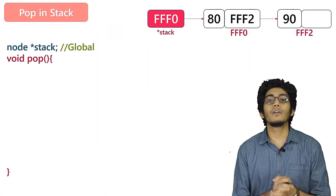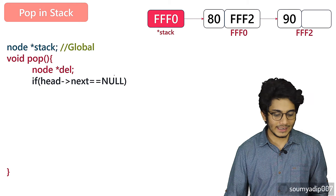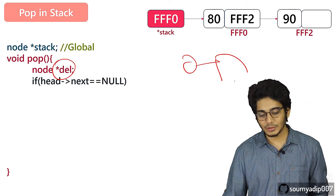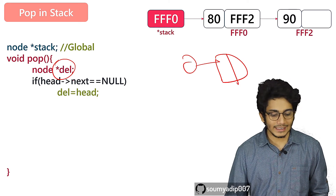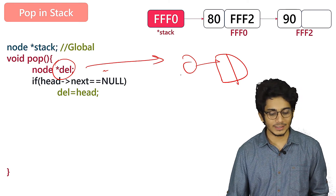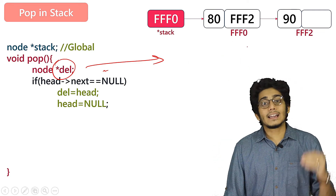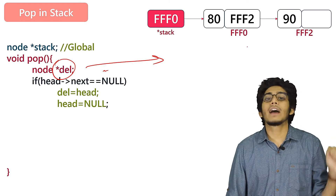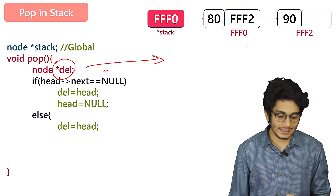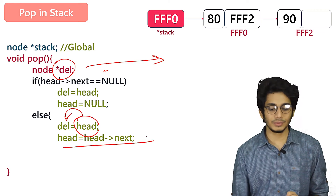Now we'll see how we can perform the pop operation into stack. We'll simply take a del pointer. Let's say we have only one value within our list — we'll check if head->next equals null. If so, we'll put head into del and set head equals to null, after which our stack will be underflow. Else, we'll set head into del and move head to head->next.